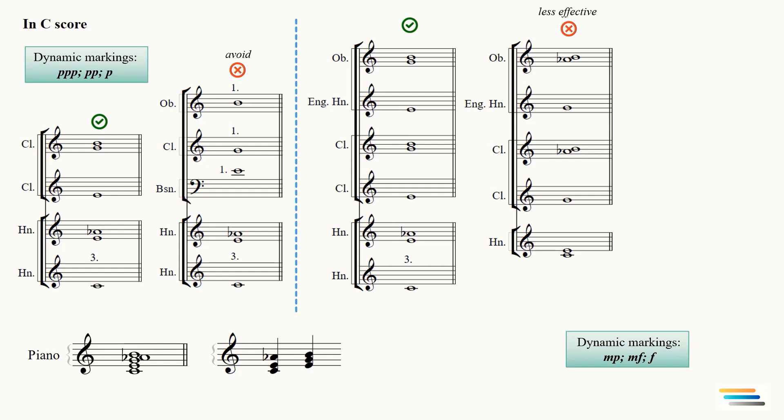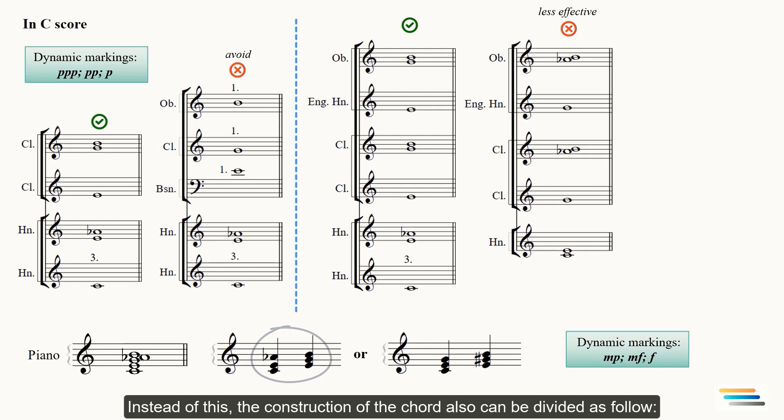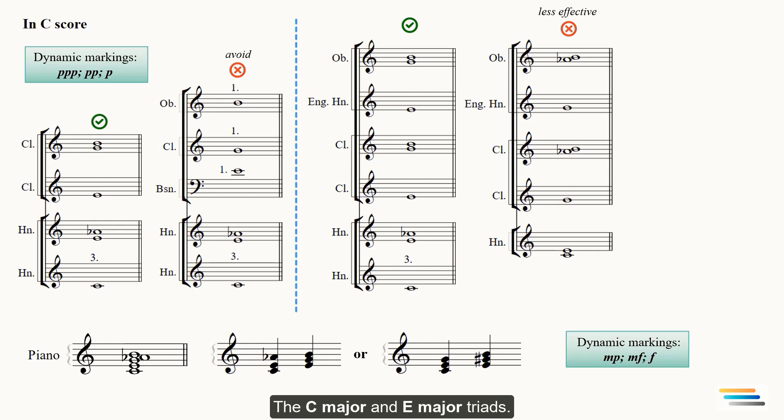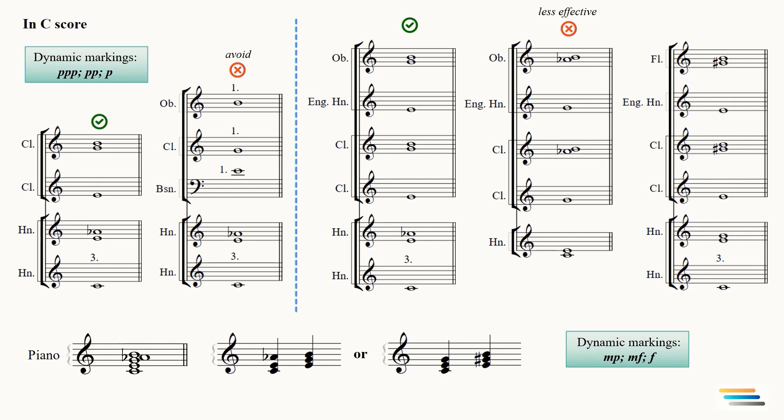Instead of this, the construction of the chord also can be divided as follow: the C major and E major triads. Three horns take the C major, while the E major will be doubled by different families.